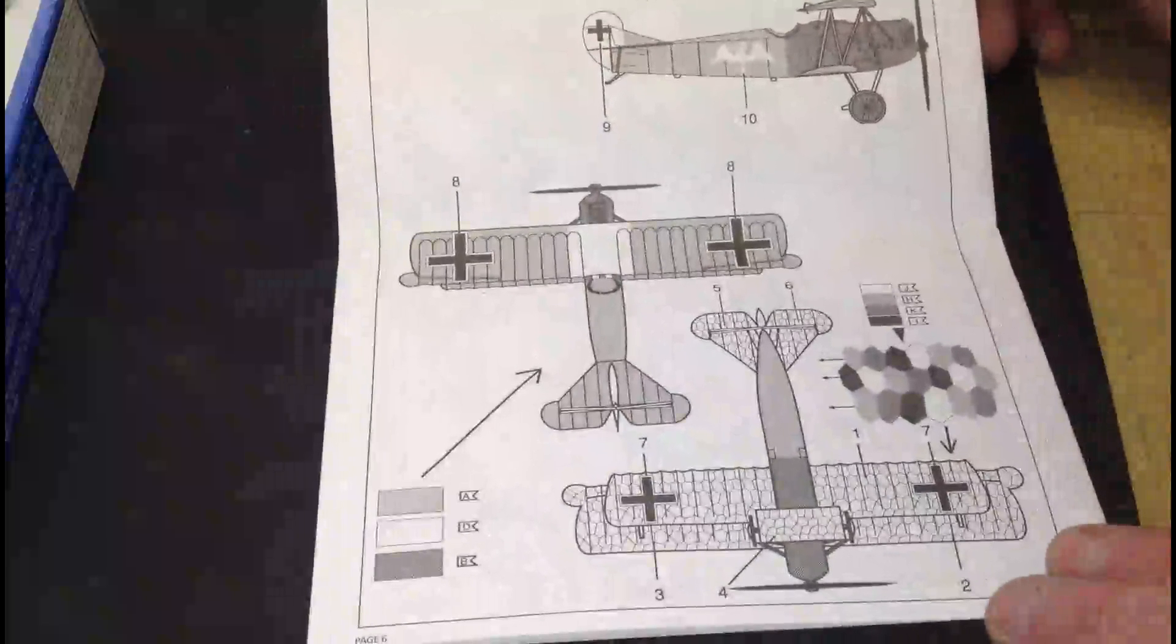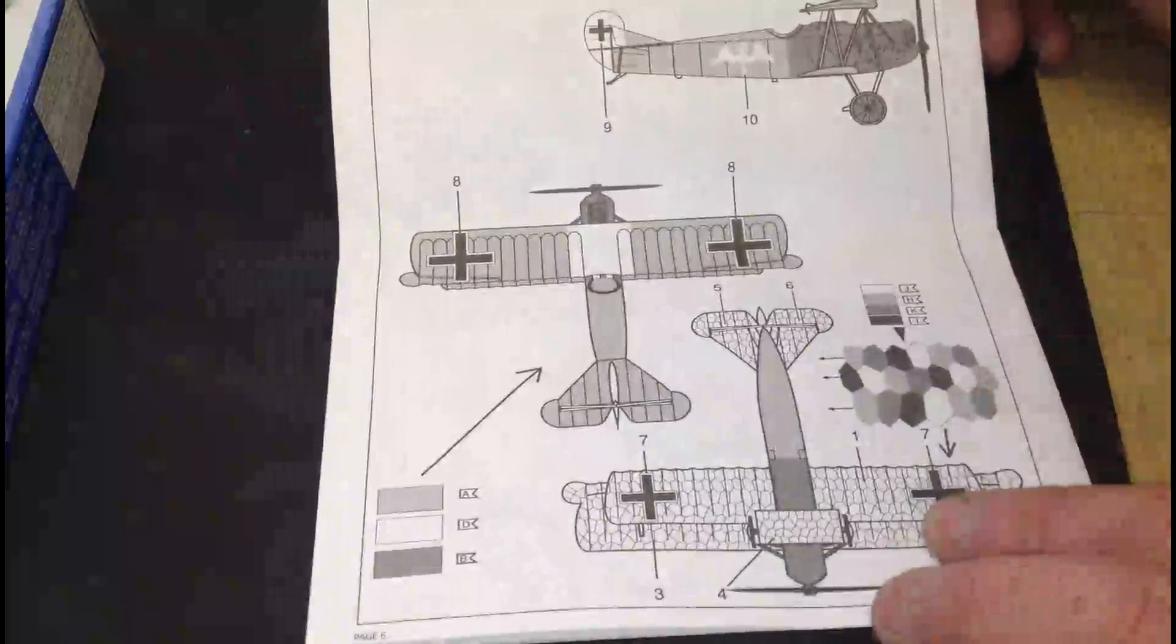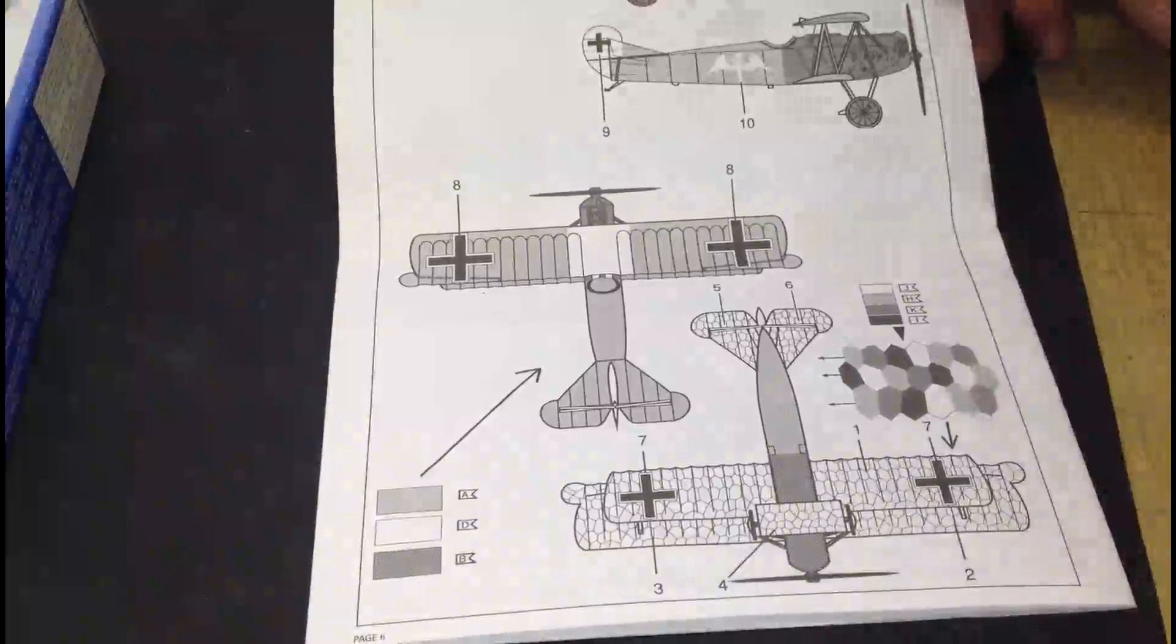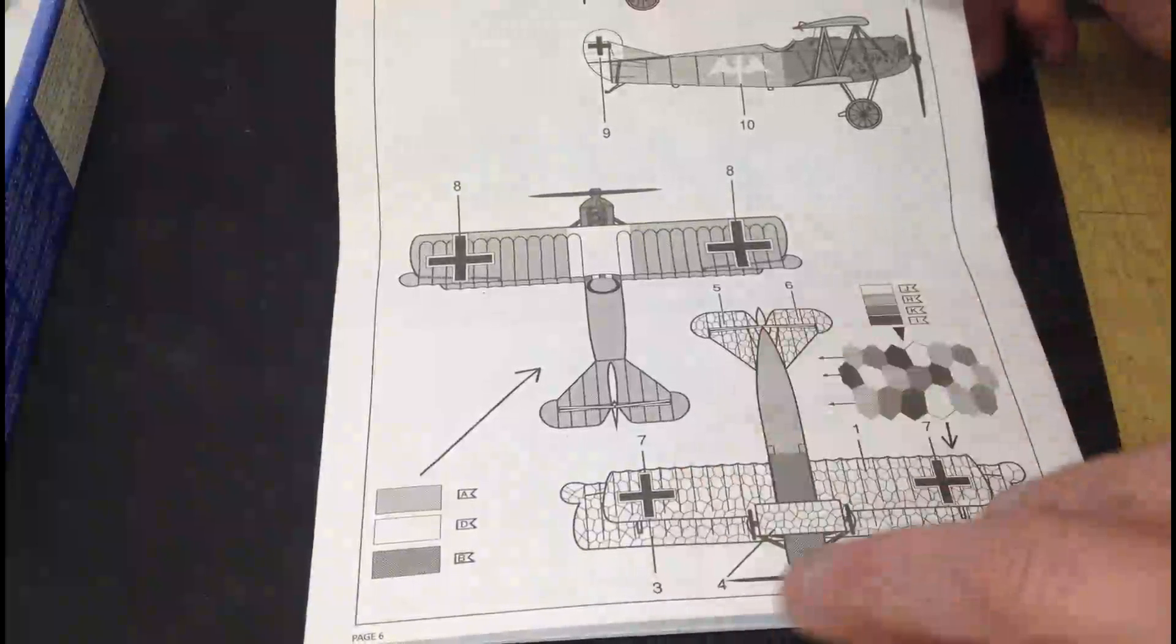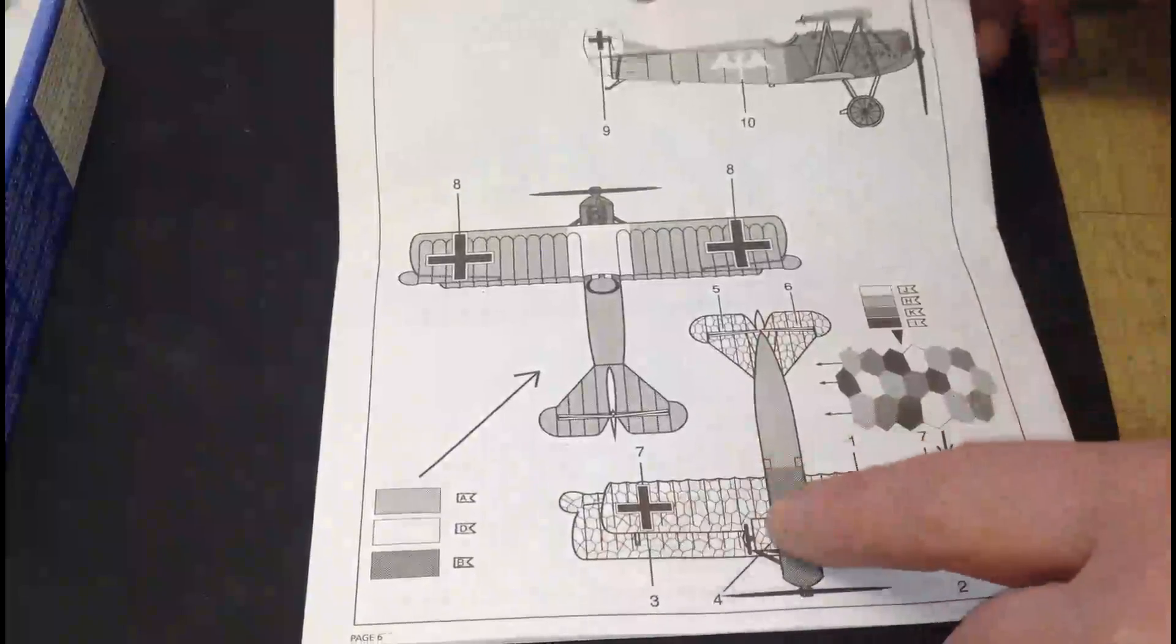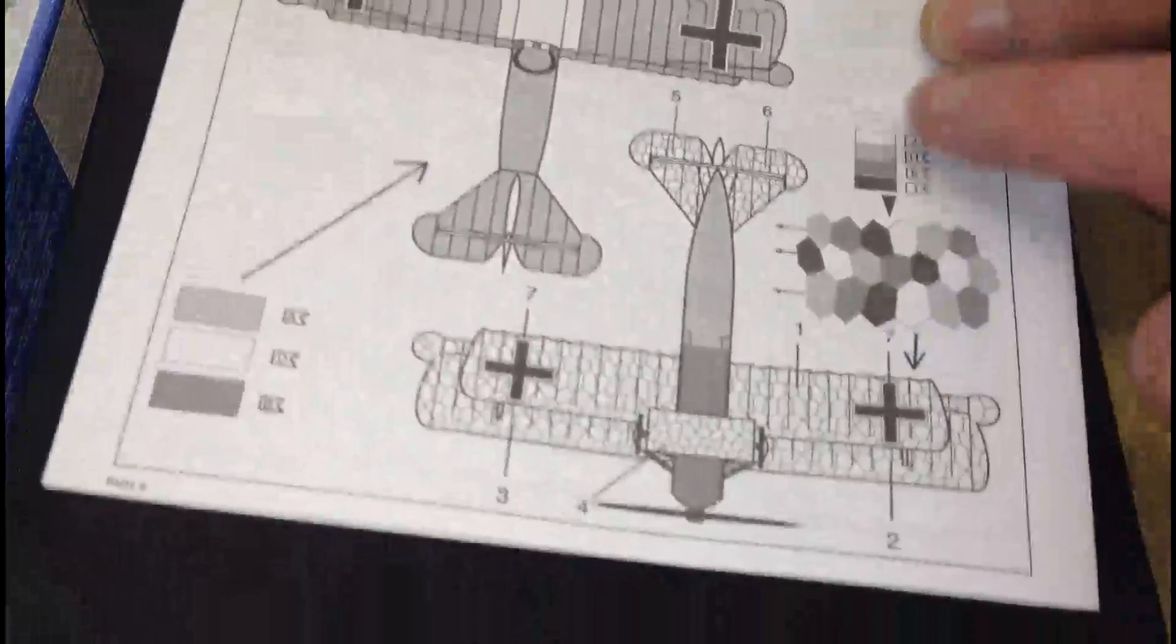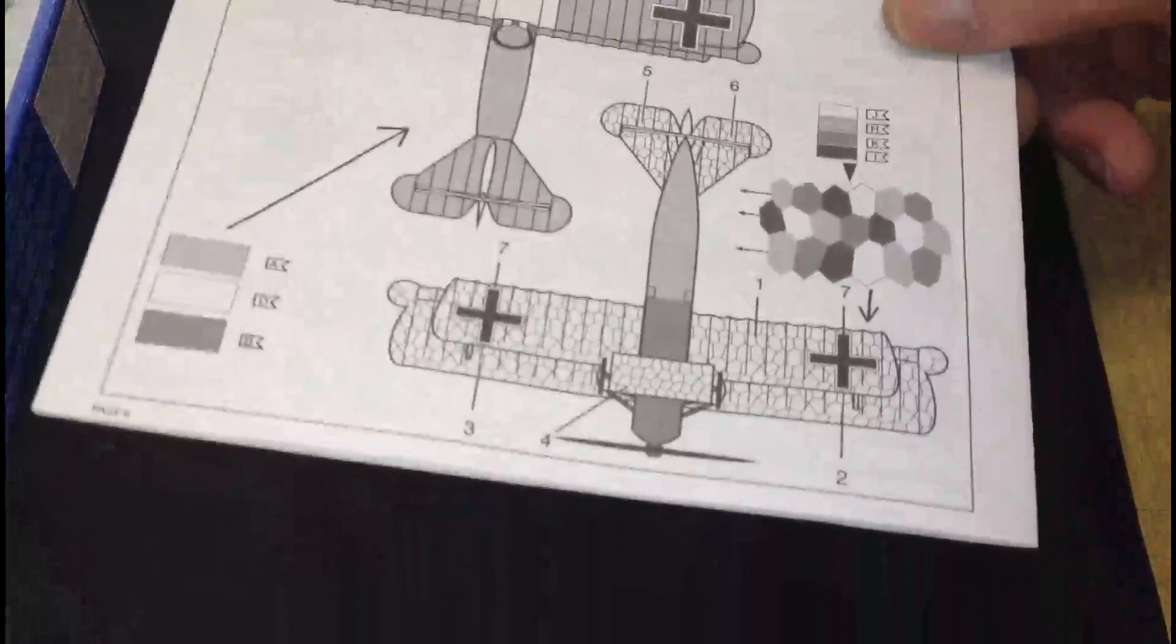The Jasta 11, 1918, Albert Rudolph Berthold. The color scheme underneath, as you can see, consists of four different colors.